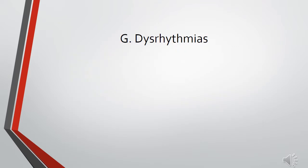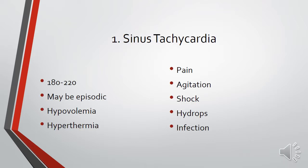Moving along, we'll cover some dysarrhythmias seen in neonatal patients. First is sinus tachycardia, characterized by a heart rate of 180 to 220, which may be episodic. It can be caused by hypovolemia, hyperthermia, pain, agitation, shock, hydrops, or infection. There usually isn't a direct treatment — you treat the underlying cause: manage pain, improve comfort, give fluids for low blood volume, treat infection, or cool the patient if they're hyperthermic.